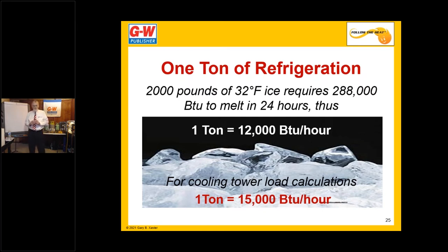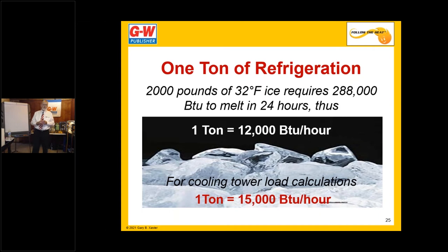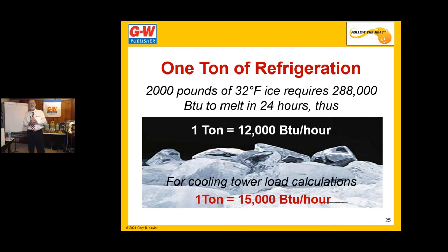For cooling towers, there is a different conversion: 15,000 BTUs per hour makes one ton on a cooling tower. The reason for that difference is the rate of evaporation of water through the cooling tower — as the water evaporates, it transfers more heat. We get our best heat transfer through the change of state. So the cooling tower ton is 15,000 BTUs per hour, while the chiller itself is 12,000 BTUs per hour per ton.